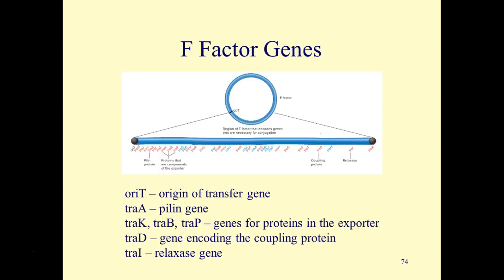Taking a look at the F-factor, which is a small, circular plasmid — it has a few important genes. The first is the Ori-T gene, the origin of transfer gene, necessary for transferring the plasmid from the F-plus cell into the F-minus cell. The TRAA gene is necessary for the production of pilin, which makes the pilus. The TRAK, TRAB, and TRAP genes code for proteins in the exporter. TRAD codes for the coupling protein, and TRAI codes for the relaxase.